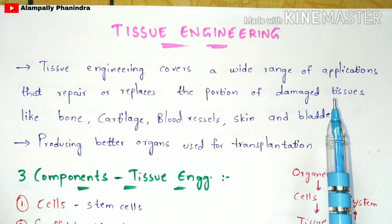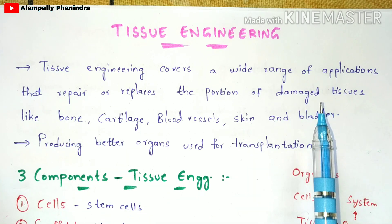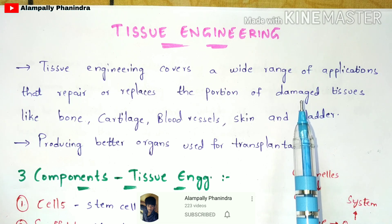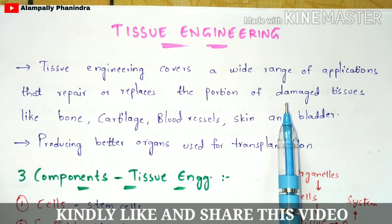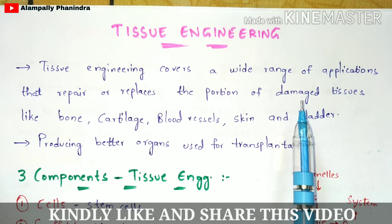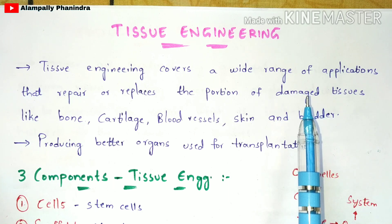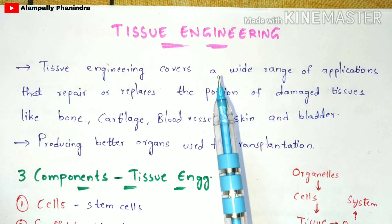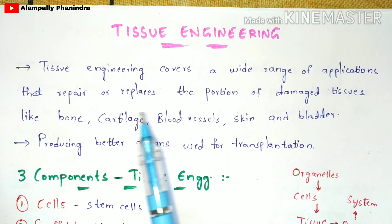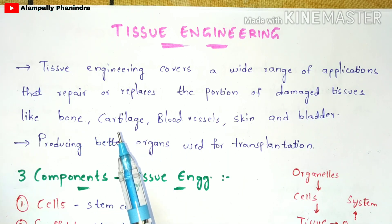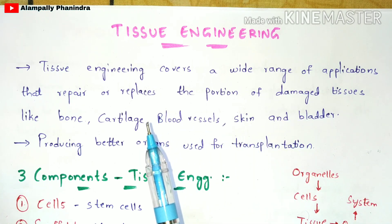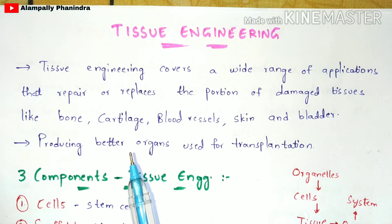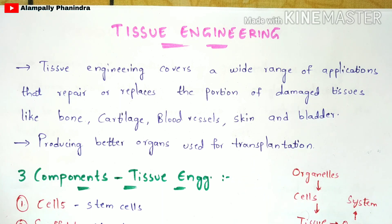For example, a bone is considered as a tissue. Once that bone gets fractured, you consult the hospital, and the doctor will apply this tissue engineering technique on that particular damaged tissue so that the fractured bone will be recovered. The main goal of tissue engineering is to develop and construct transplantable tissue and to produce better organs for transplantation.